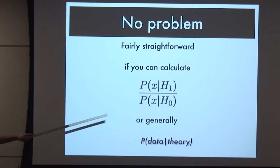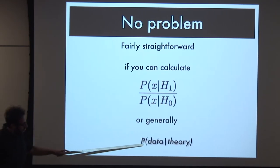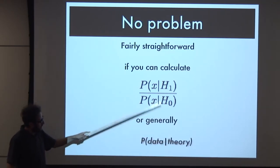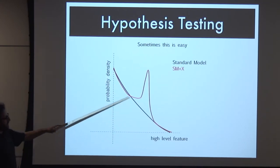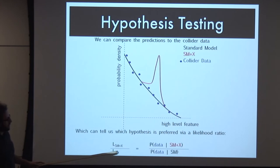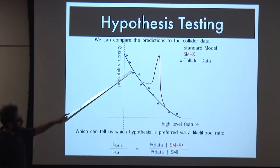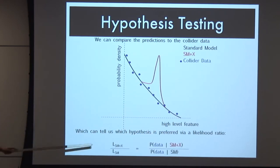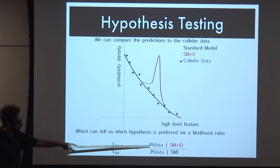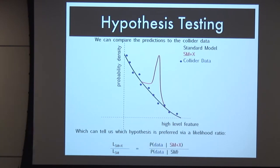This is fairly straightforward if you can calculate the likelihood ratio, or if you have a tool that can do this calculation at all - the probability of seeing your data in a given theory. You need two of these to form your likelihood ratio. Sometimes it's straightforward: for a resonance search, you have a background spectrum, and the likelihood ratio is easy to calculate because your statistical model is literally just the prediction of the density inside a bin where your data is.